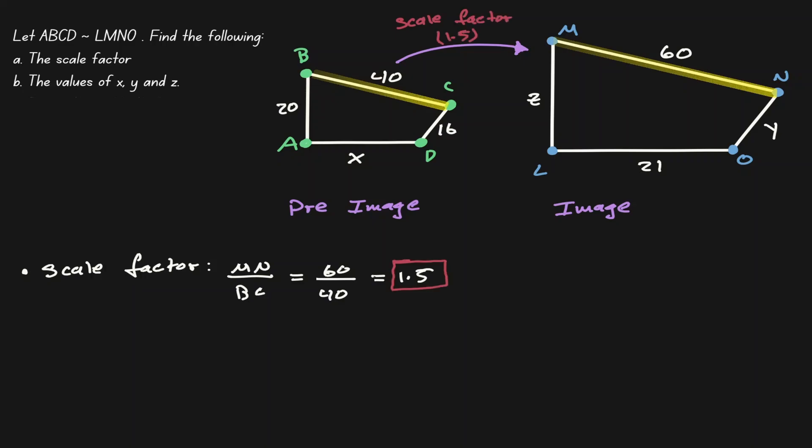Let's make sense of this value. What we are saying is that if we take any line segment from the figure on the left and multiply it by 1.5, we will get the length of the matching side on the figure on the right. So we can develop a small equation based on that relationship: any segment from the left, multiplied by the scale factor, gives the length of the matching side on the right.